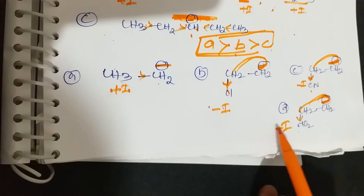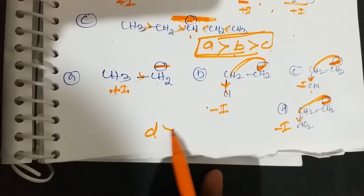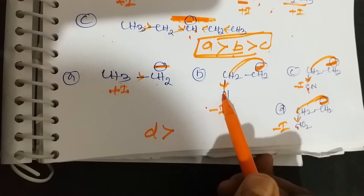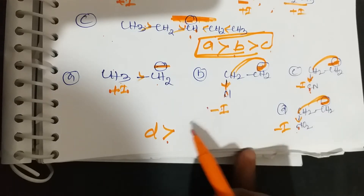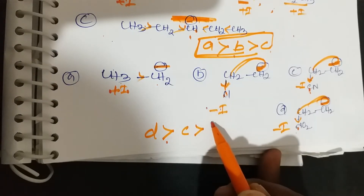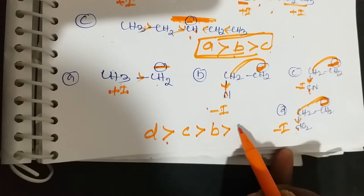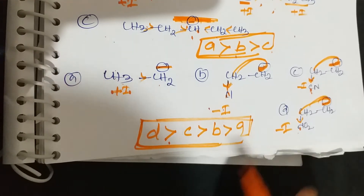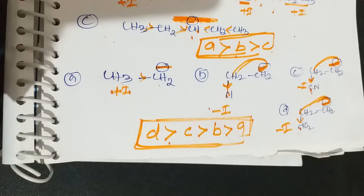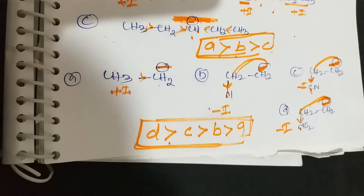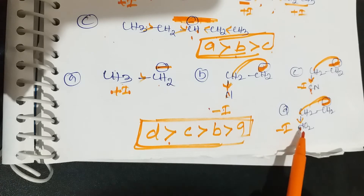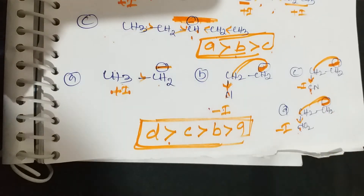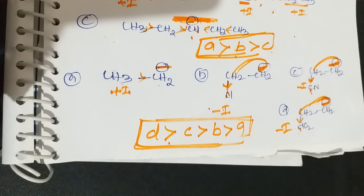The stability order is D > C > B > A, because NO2 is a stronger withdrawing group than CN, and CN is a stronger withdrawing group than Cl. So D > C > B > A is the stability order of carbanions. Due to the presence of −I groups, the negative charge completely disappears, making the compound more stable.